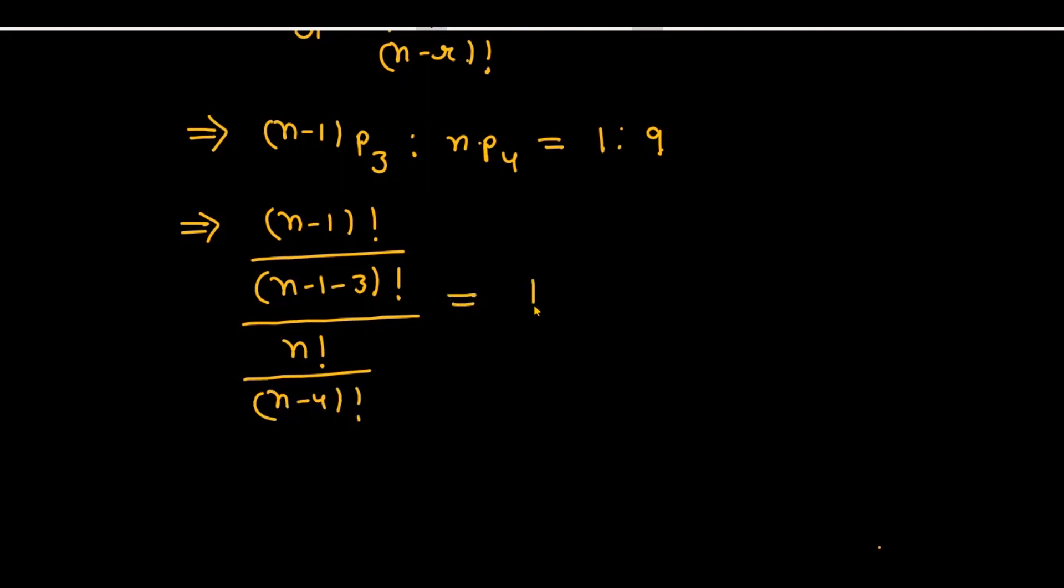If x is to y is equal, then we can also write a upon b is equal to x over y, which is equal to n-1p3 divided by np4, and this is equal to 1 upon 9.